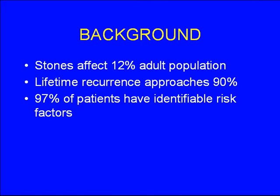Some basic facts: stones affect up to 12% of the adult population, making them very common. The lifetime recurrence approaches 90% among stone patients, and particularly if you have a relative with a history of stones, you're nearly assured of recurrent stones without some type of risk reduction. When you do metabolic evaluations, about 97% of patients have identifiable risk factors — meaning if you make a dedicated effort, you can almost always find at least one quantifiable risk factor and in theory intervene to reduce stone risk.